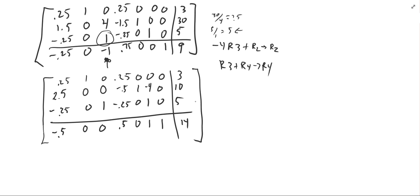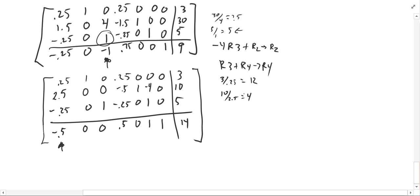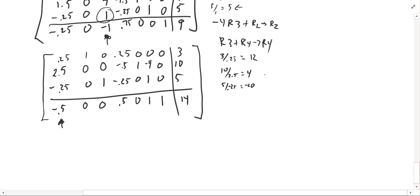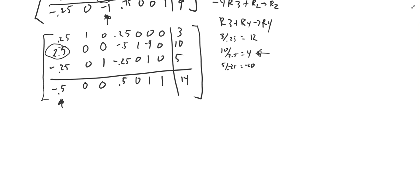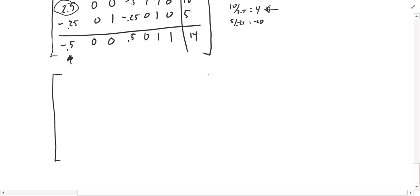I'm still not done — there's still a negative in the bottom row, negative 0.5 in the x column. I divide the right-hand side values by the x column entries: 3 divided by 0.25 is 12, 10 divided by 2.5 is 4, and 5 divided by negative 0.25 is negative 20 — I ignore negatives. The smallest positive ratio is 4, so the pivot is 2.5 in row 2's x column. I divide row 2 by 2.5.